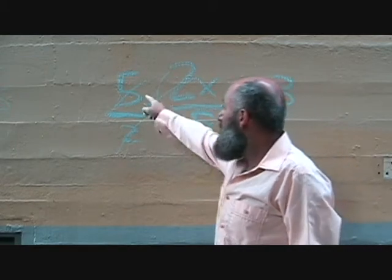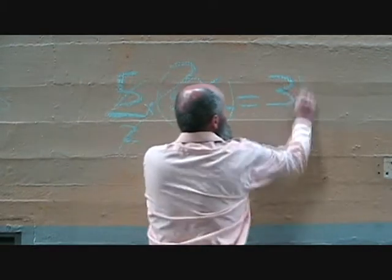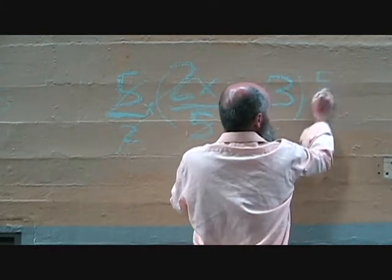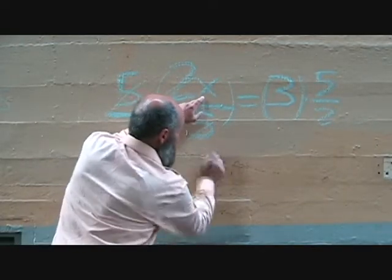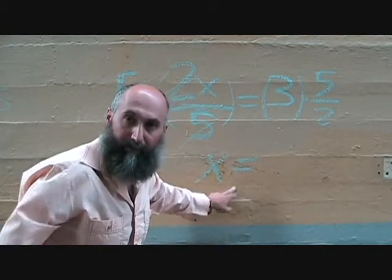So what you got left on this side is just the x. Now if you multiply this side by 5 over 2, you're going to multiply this side by 5 over 2. So multiply this side by 5 over 4. Now on this side, all we got left is the x.